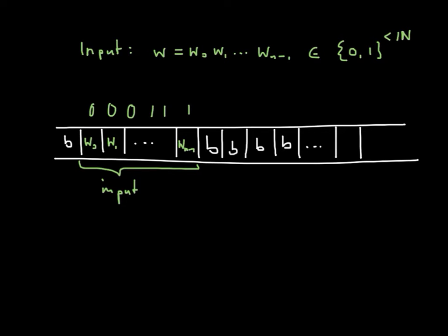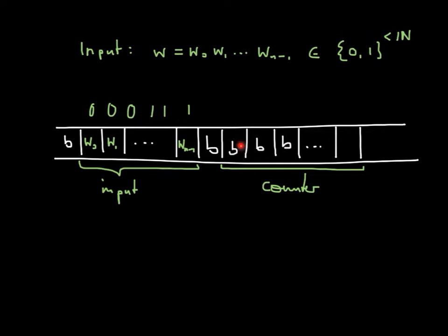The idea would be to scan the input from left to right. Remember, we always start on the cell to the left of the input. Whenever we read a 0, we use an area to the right of the input as a counter area, and we increase that counter by 1. Then when we stop reading 0s and read 1s, we decrease the counter by 1 accordingly. Once we hit the blank — meaning we have read through all the input — we check whether our counter is also back to 0 or blank, or if there's still a symbol left there, and then decide accordingly.